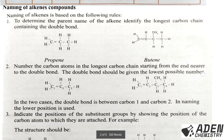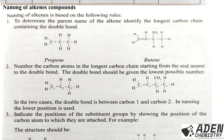Now let's proceed to naming of alkenes. Naming is based on the following rules. Rule 1: Determine the parent name of the alkene by identifying the longest carbon chain containing the double bond. For example, if we have a structure with three carbon atoms in the longest chain, the parent name is 'prop-'. Because of the double bond, the compound would be named propene. If the longest chain has four carbon atoms, the parent name is 'but-', giving butene.